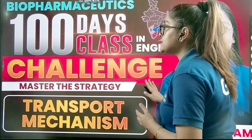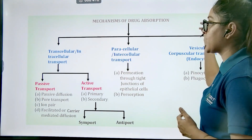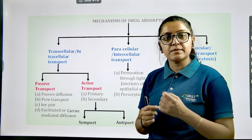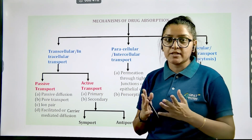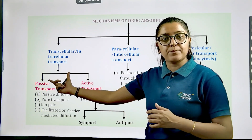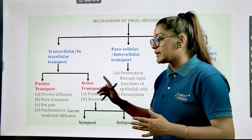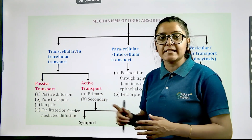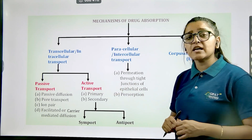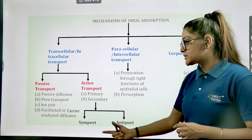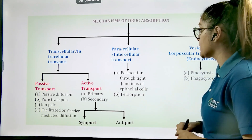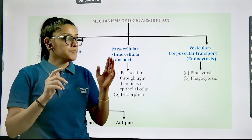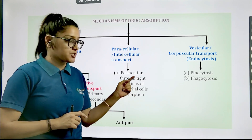Based on what we covered previously, the mechanism can be through intracellular or transcellular transport across the membrane. Because it goes across the membrane, it will be based on the concentration gradient as well as the nature and type of drug. It can be passive transport or active transport. In passive transport we have passive diffusion, pore transport, ion pair, and facilitated diffusion. In active transport we have primary active or secondary active transport, further categorized into symports and antiports.